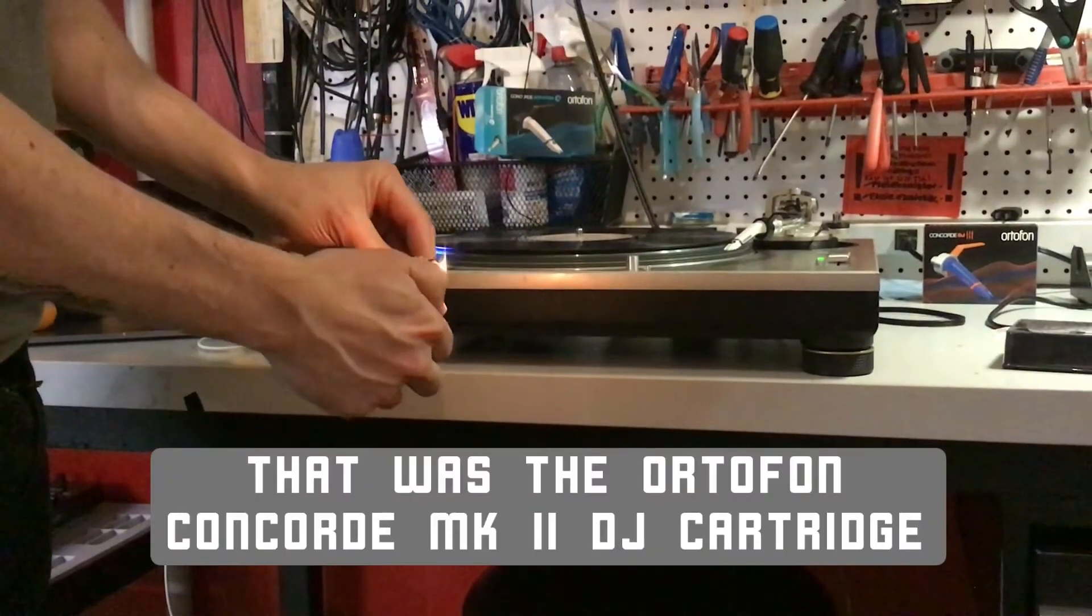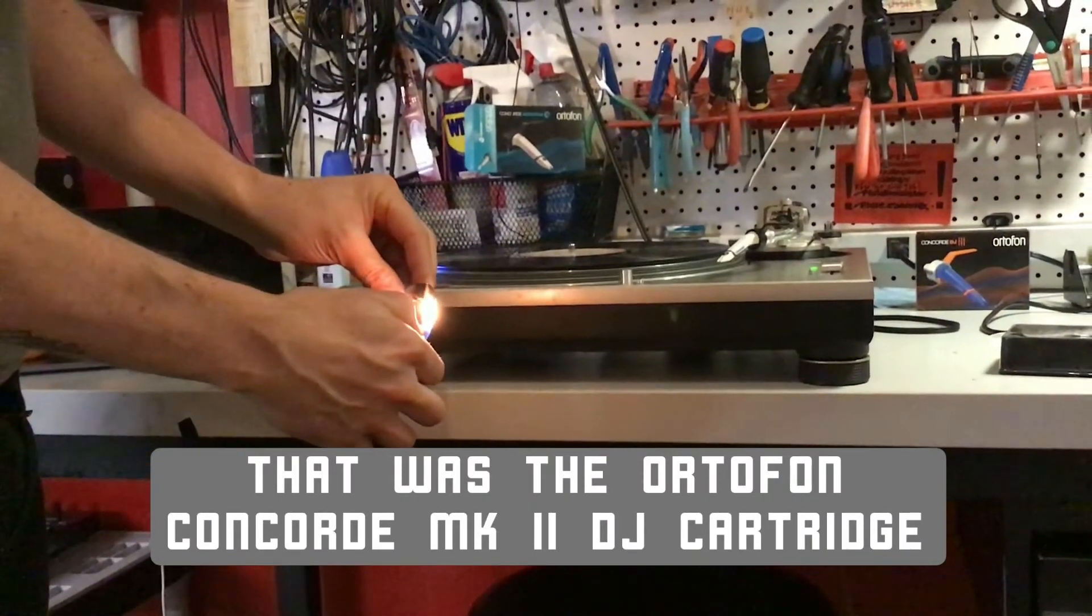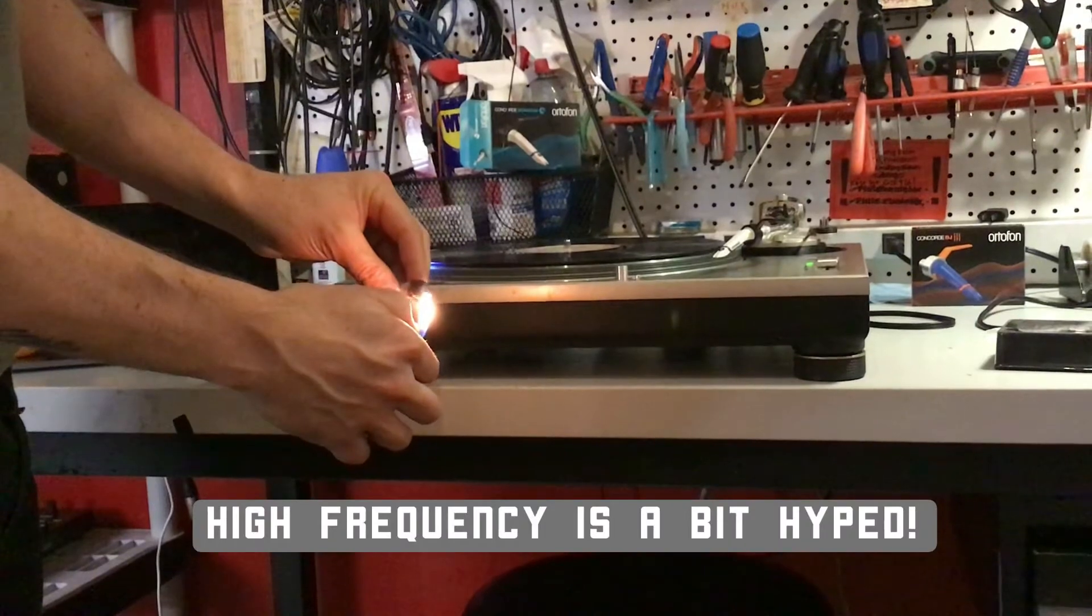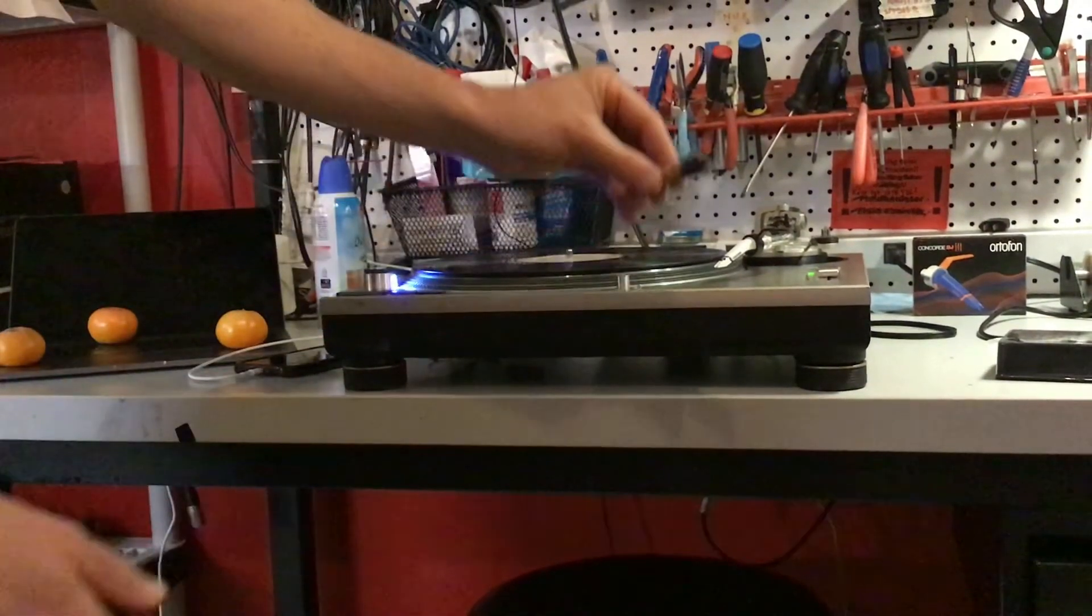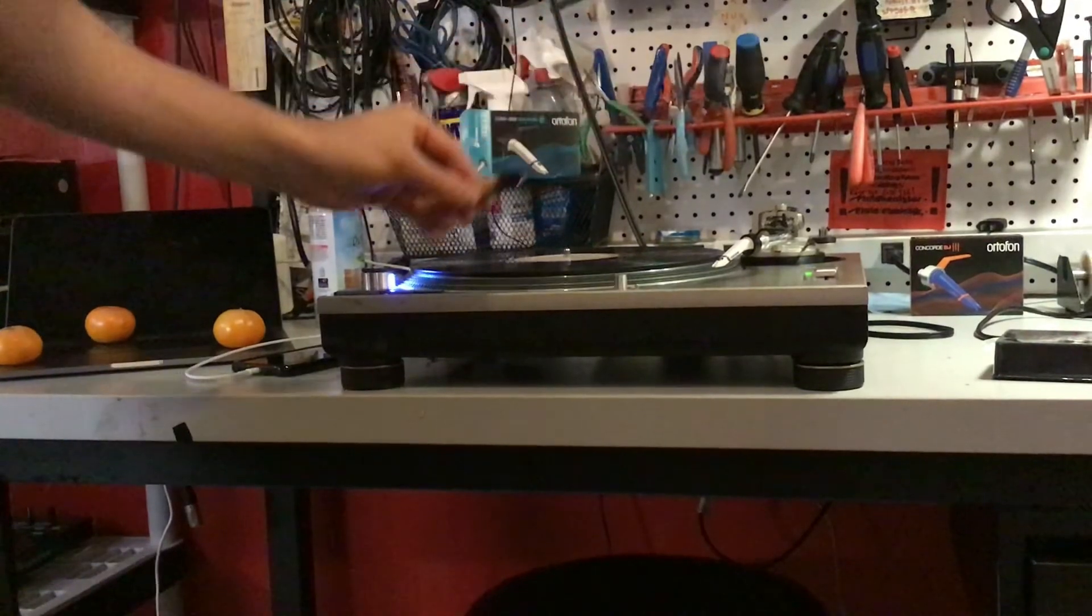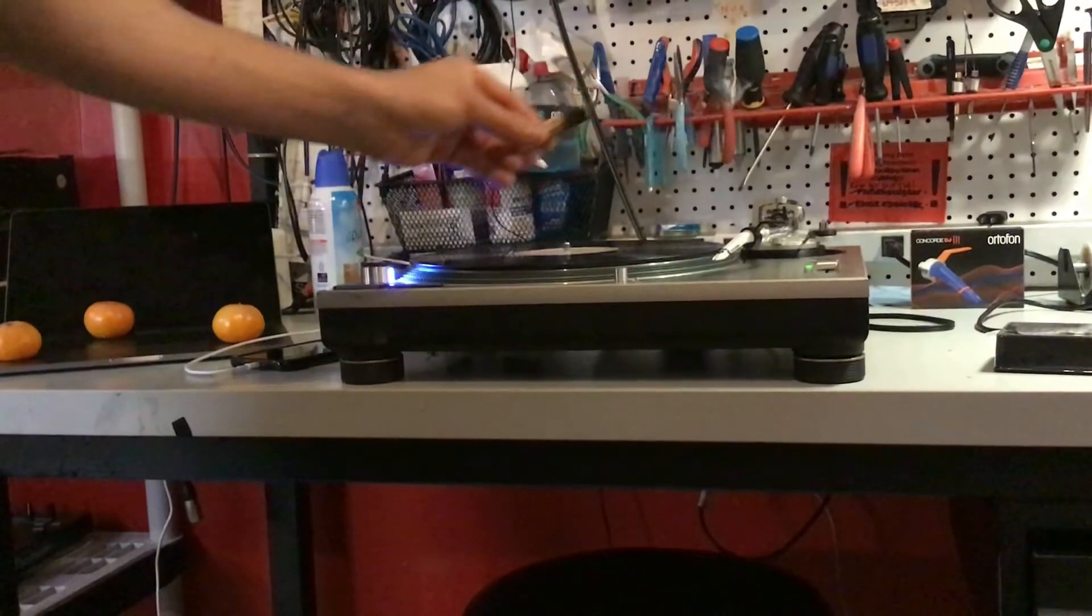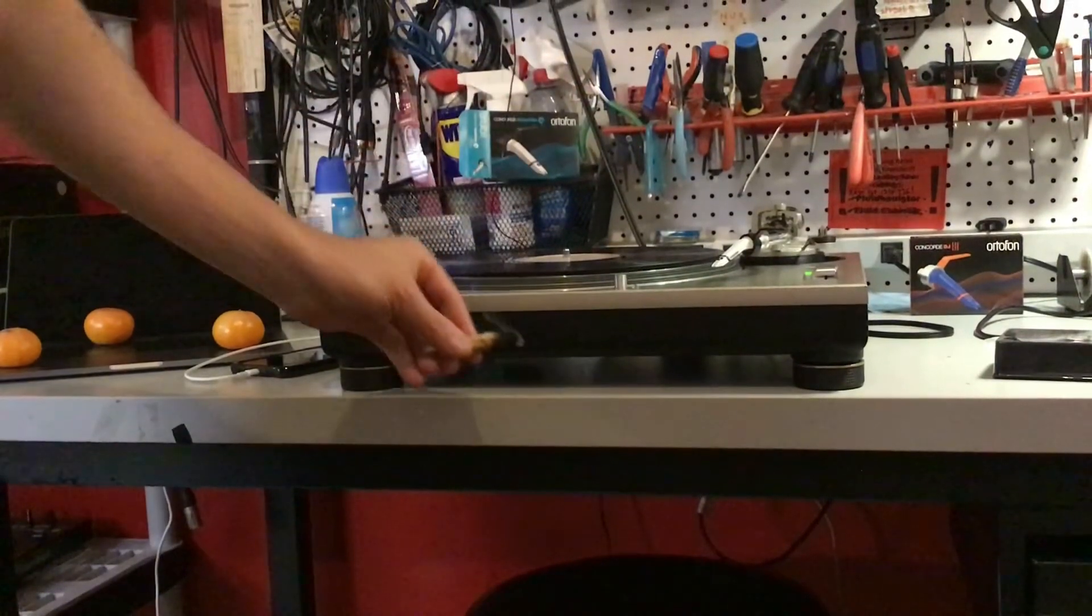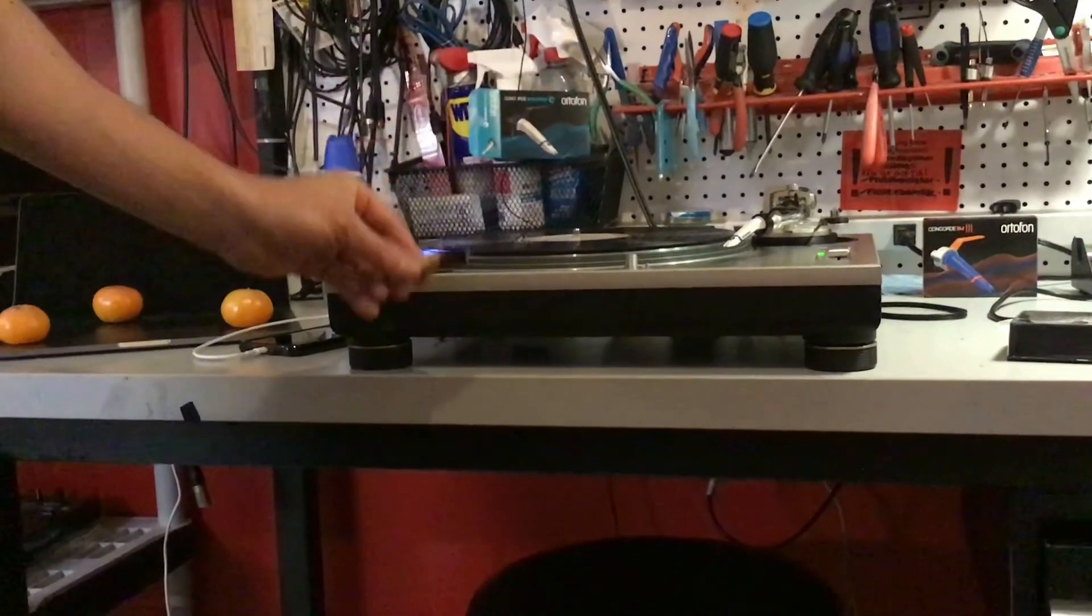So there you go. That's the results of the test for the Ortofone DJ cartridge. Looks like the high frequency stuff is a little bit hyped. So if you like the cymbals, you'll definitely hear them. A little distortion between about 4k and 12k. And the volume comes down around 6k or 8k. So your cymbal attack sounds maybe a little bit muted. And some of your traditionally harsher treble sounds will come down a little bit.